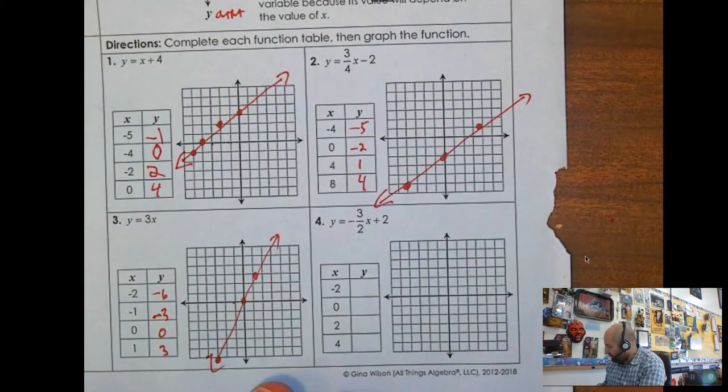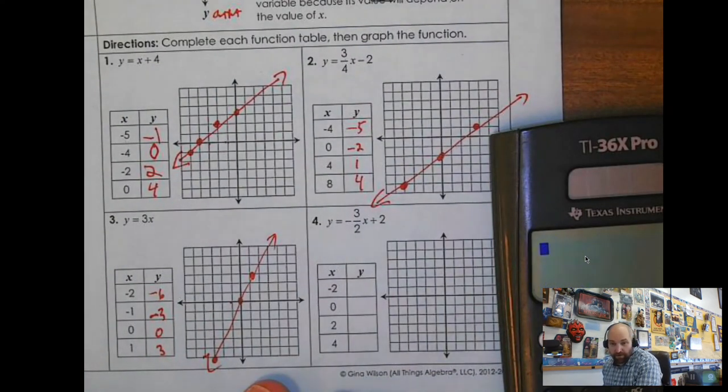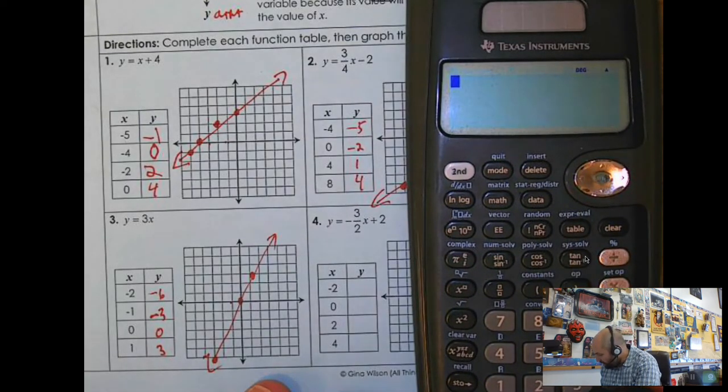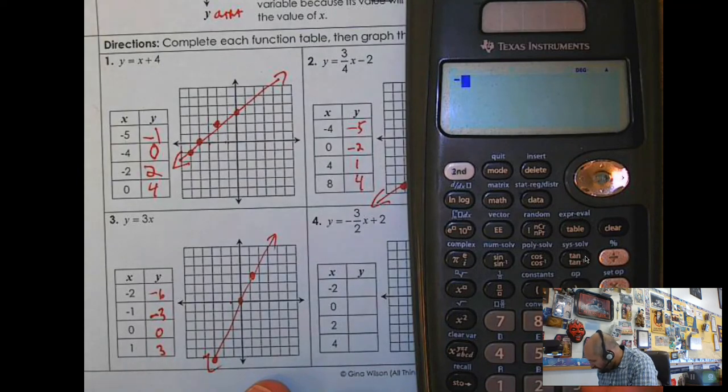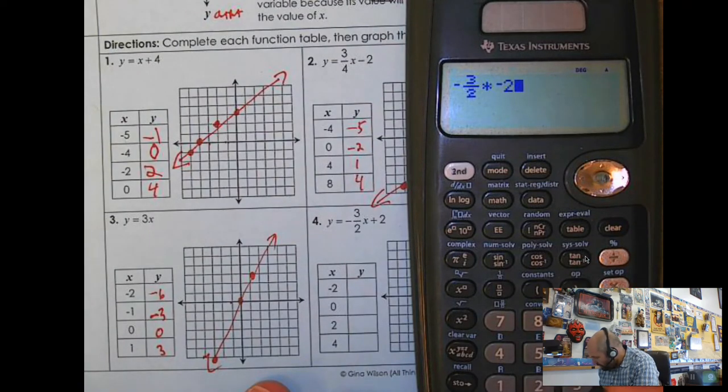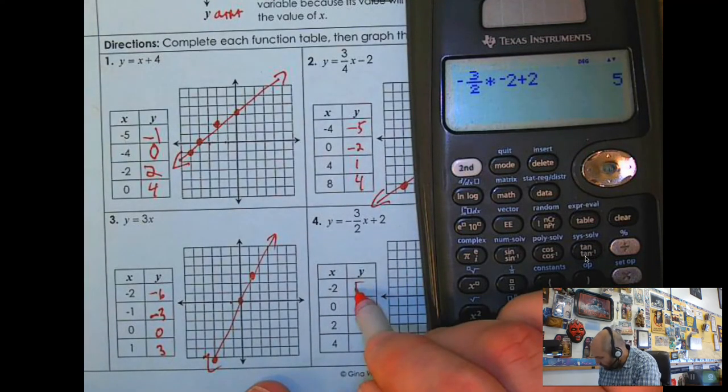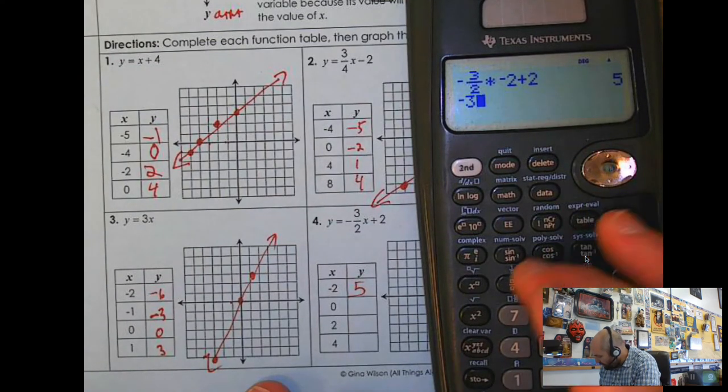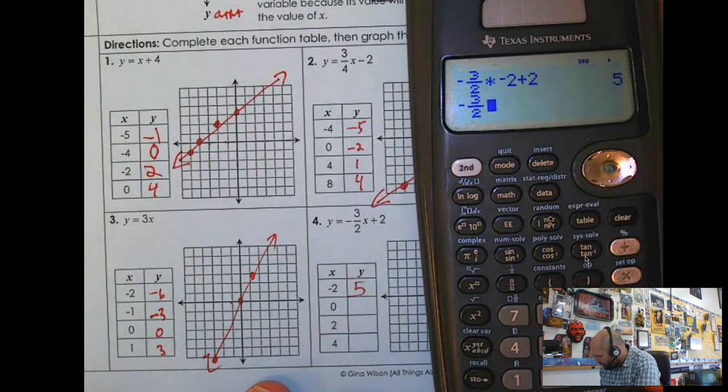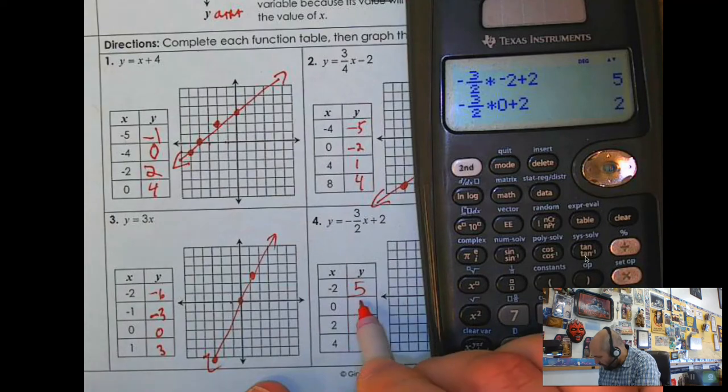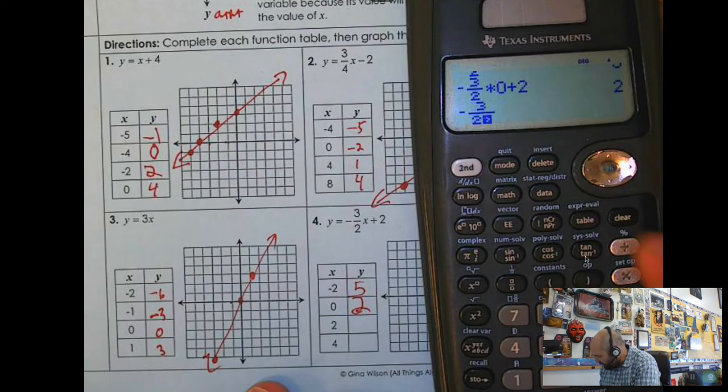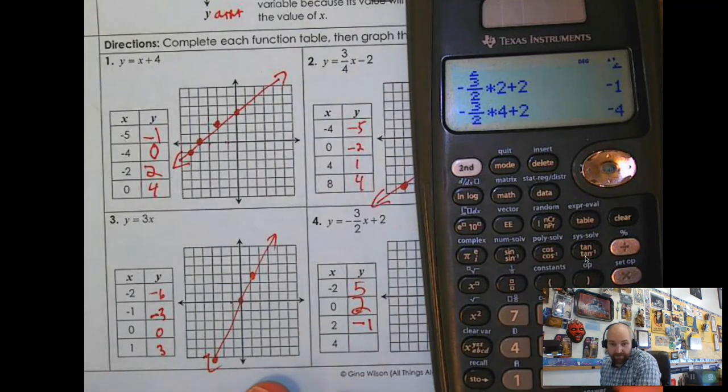I'm going to go ahead and do this one. So I'm going to grab my calculator. I'm going to plug in these values. I'm going to do negative 3 over 2, times it by negative 2, add 2, I get 5. And then I'm going to do negative 3 over 2, times it by 0, add 2, and I get 2. And then I'm going to do negative 3 halves, times it by 2, plus 2, and I get negative 1. And I'm going to do negative 3 halves, times it by 4, plus 2, and I get negative 4.